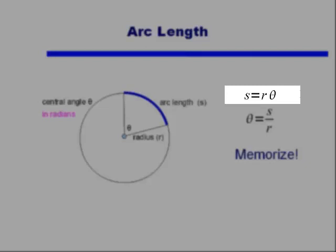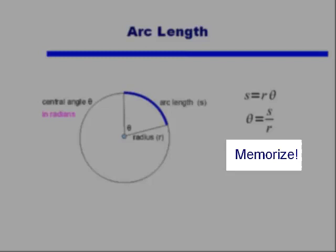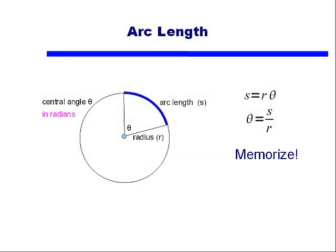You can either use this formula in the form S equals R times theta. Personally I find it easier to remember this formula in terms of theta equals S over R. That is, that angle measured in radians is equal to the arc length divided by the radius. And this is a formula I'm asking you to memorize. You will not be given this formula on an exam.